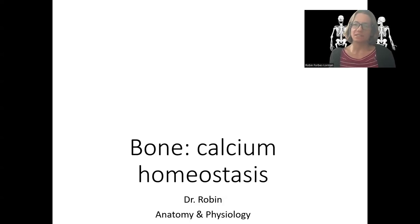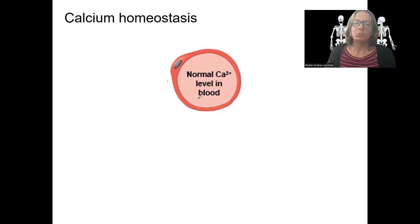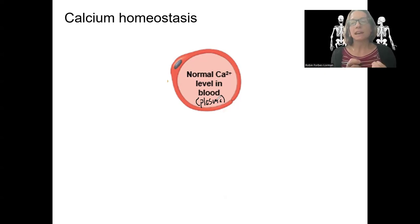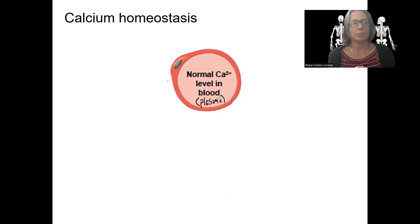Calcium homeostasis. This is going to involve feedback loops and the endocrine system. Let's first talk briefly about why calcium is so important. When I say calcium, I'm talking about levels in the blood — in the plasma. This is a homeostatic variable, so it needs to be maintained within a certain range because calcium is so important in many physiological processes. We'll see this with synaptic release of neurotransmitters, with muscle contraction, and it's also important for cell signaling and many other things. So we need to regulate it.